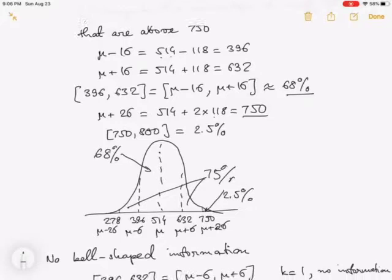But the graph is bell-shaped. So mu minus 2 sigma is 278. On the interval from 278 to 750, around 95 percent of the scores are on this interval. That means 5 percent of the scores are outside that interval. And because of the symmetry, that means 2.5 percent are on the right and 2.5 percent are on the left. In other words, on the interval from 750 to 800, there are around 2.5 percent of the scores.